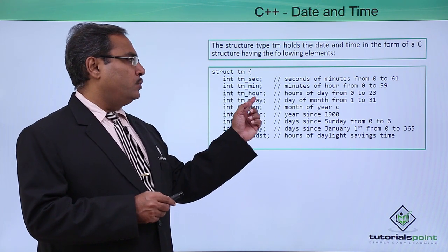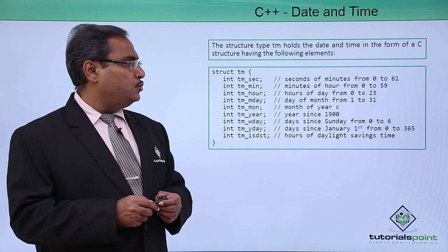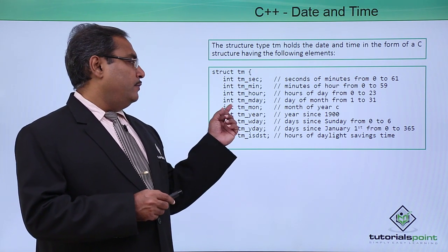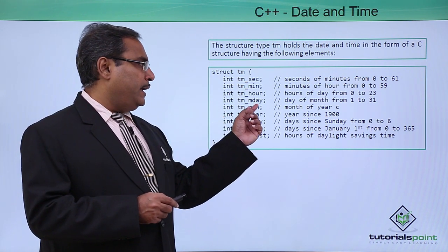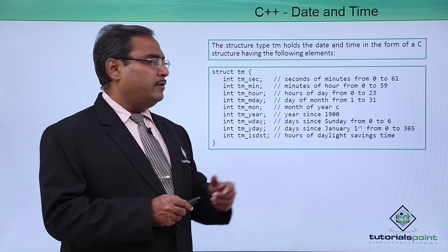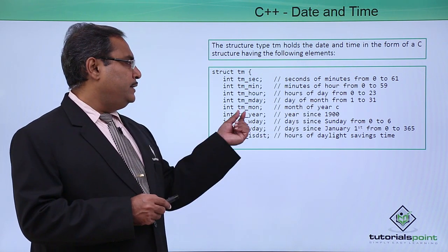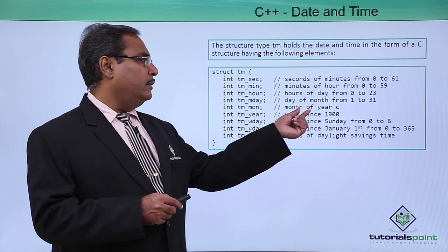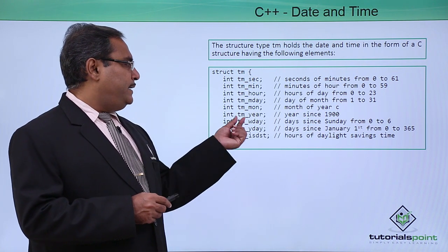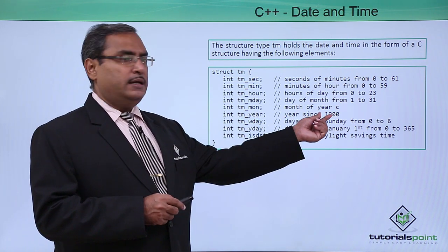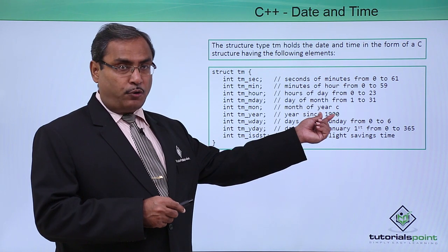int tm_mday, it is a day of the month from 1 to 31. tm_mon, the month of the year. tm_year, year since 1900. So it is very important, here we are doing this calculation of this year from 1900.